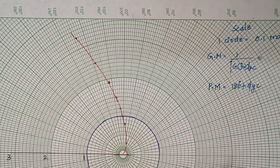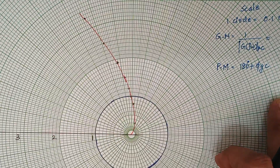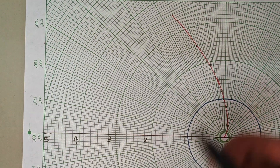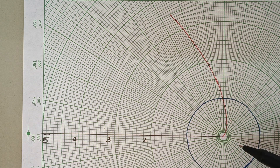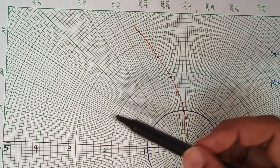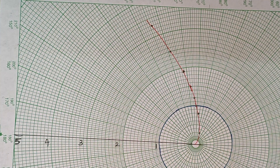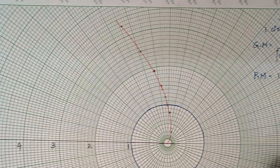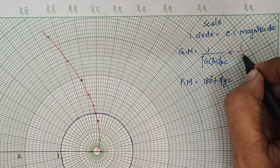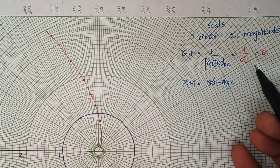Next, we find the gain margin and phase margin. To find the gain margin, the plot should cut the 180 degree line somewhere. But here, our plot did not cut the 180 degree line at any point. So we assume this line will cut the 180 degree line somewhere at infinity. Therefore, gain margin equals 1 divided by infinity, and anything divided by infinity is 0. So the gain margin for this particular plot is 0.